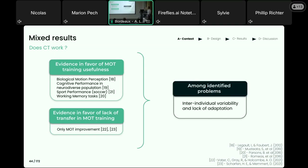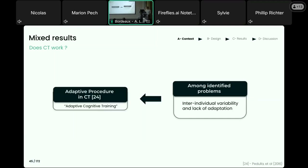Among the several open questions behind these mixed results, today I'd like to focus on the problem of high inter-individual variability in response to such programs — that is to say, some participants improved after training while others did not. To tackle this issue, previous work has already shown that an adaptive procedure would lead to greater improvements than non-adapted ones.